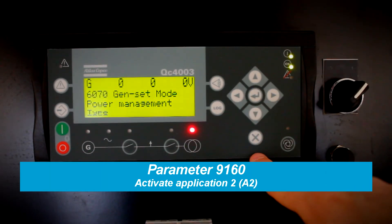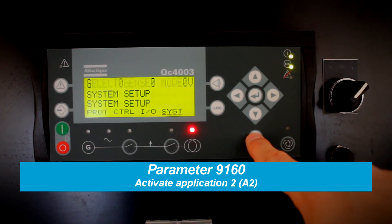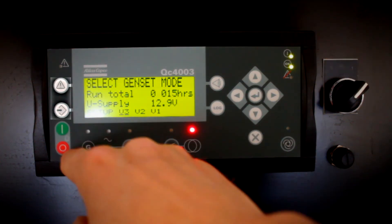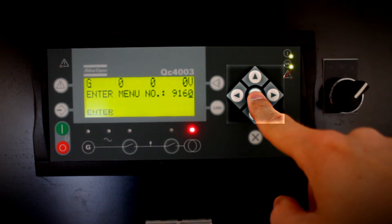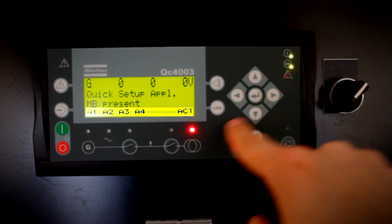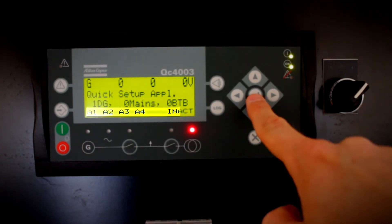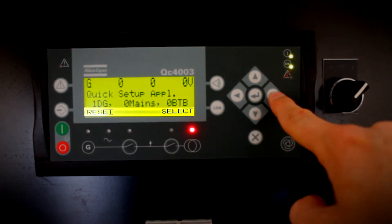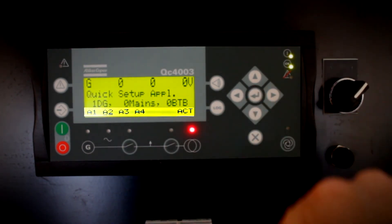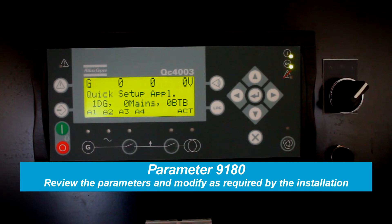Activate Application 2 at parameter 9160 by pressing Jump button and scroll and select parameter 9160 on the screen. Go to A2 and select it. Ready for the last step?